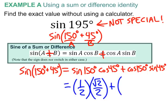Plus cosine of 150 degrees. That is negative, root three over two, sine of 45 degrees, root two over two.